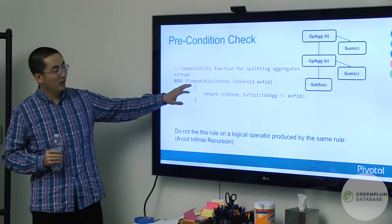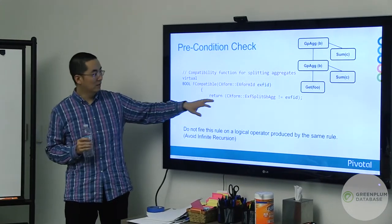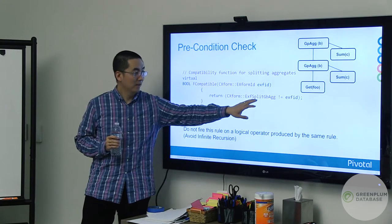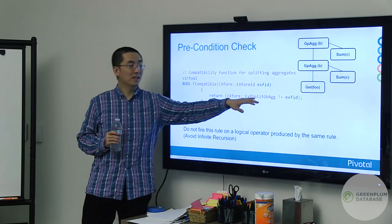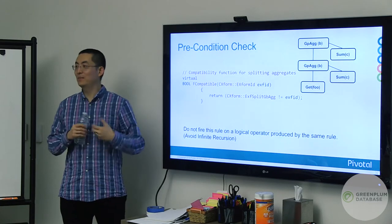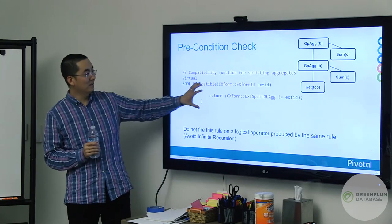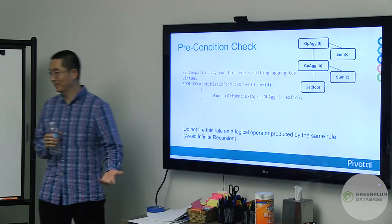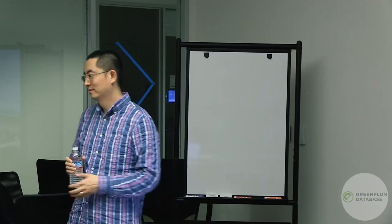The precondition says: is my rule actually compatible? If my result was not generated by myself, then I can apply it. This basically prevents recursive infinite splitting. At each step, we record who created this operator, so if it was already fired once, it says 'this was created by a split' and we truncate that.